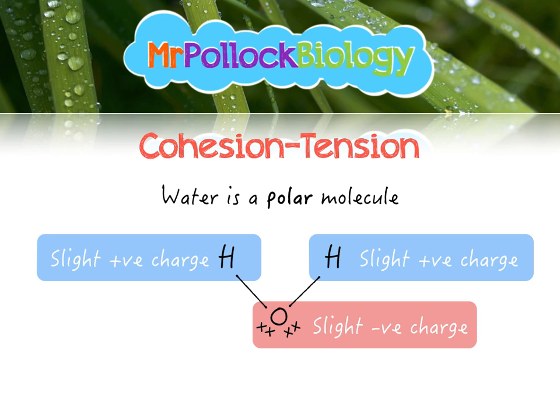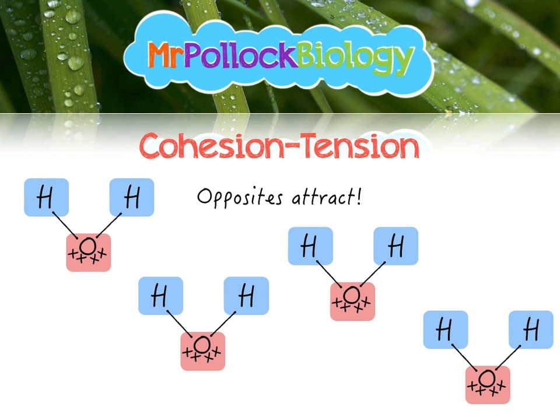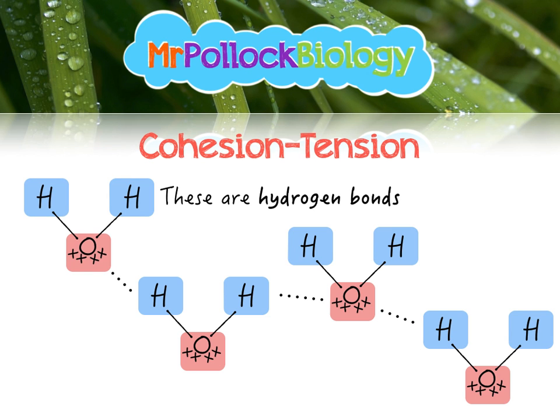Because opposites attract, the oxygen of one water molecule is attracted to the hydrogen of an adjacent molecule. This weak electrostatic attraction is known as a hydrogen bond. Up the xylem, all of this water forms a continuous column — loads of water molecules attracted to one another — and that is the cohesive property of water.